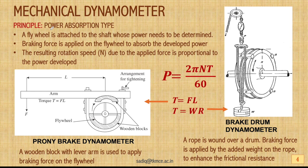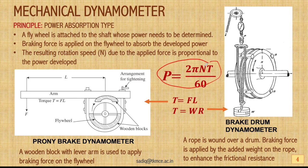Mechanical dynamometers are examples of power absorption type dynamometers, meaning they absorb energy during measurement of power and torque. Generally, a flywheel is attached to the output shaft of the device under test, and a braking force is applied on the flywheel to absorb the developed power. When the braking force is applied, the rotation speed of the shaft is reduced. The resulting rotation speed due to the applied force is proportional to the power developed, since power P equals 2π times speed N times torque T.